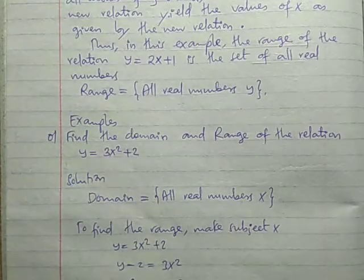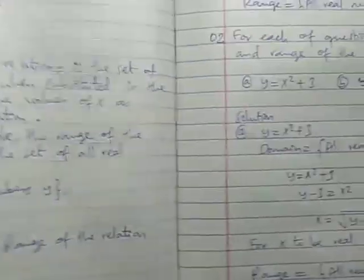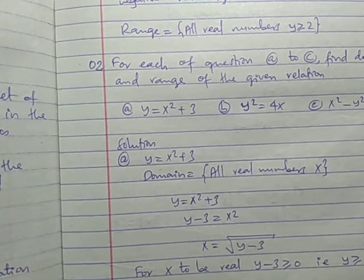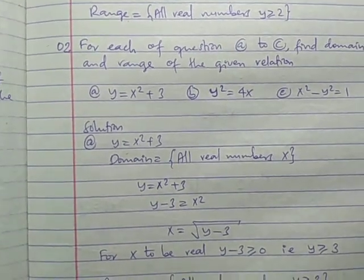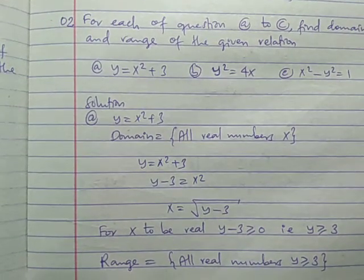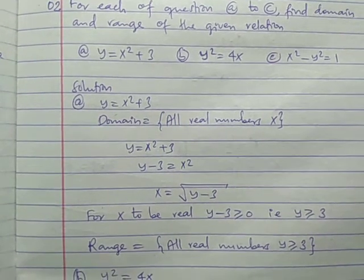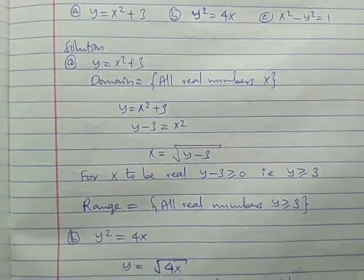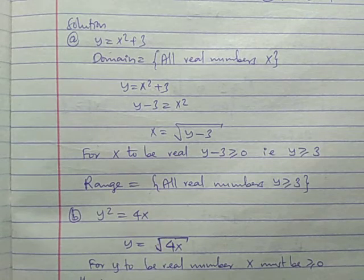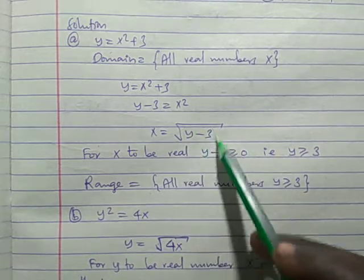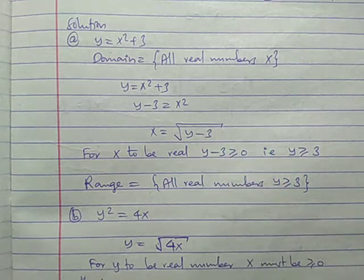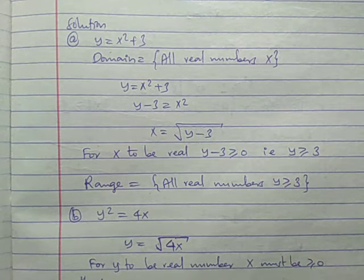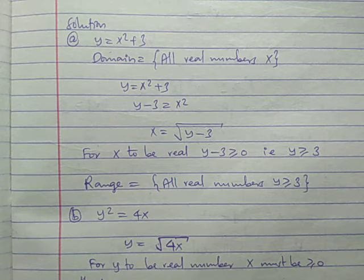Mbaka hapo, tumerewesha kusolve domain and range of a relation. So solving for range, we get only values Y ≥ 2. Hizi ndo concept ambazo natumia kote — you will see more questions in the notes. The key rule is: if there is a square root, the expression inside must be greater than or equal to zero. In the next session, tutaangalia graphs of a relation — how to draw the graphs of a relation.